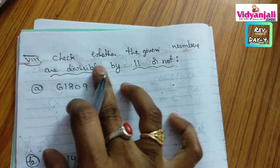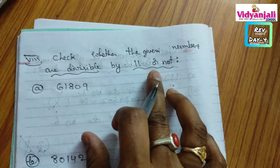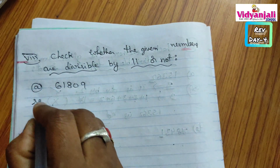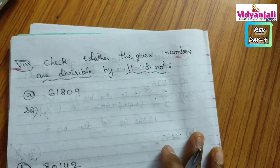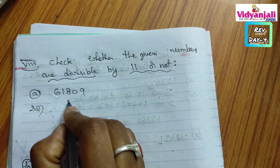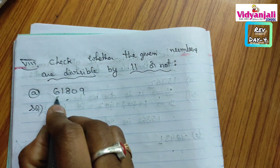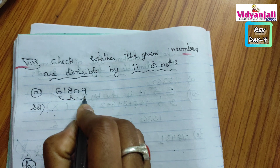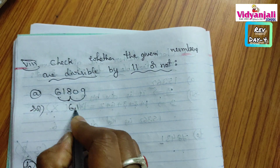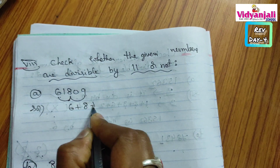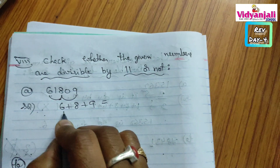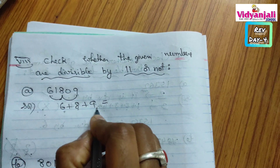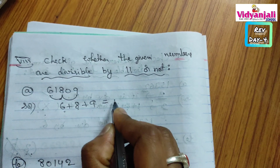8th Roman: check whether the given numbers are divisible by 11 or not. How to check 11 divisibility? We have to add alternate digits. The digits in odd places are 6, 8, 9. What is 6 plus 8 plus 9? 6 plus 8 is 14, plus 9 is 23.